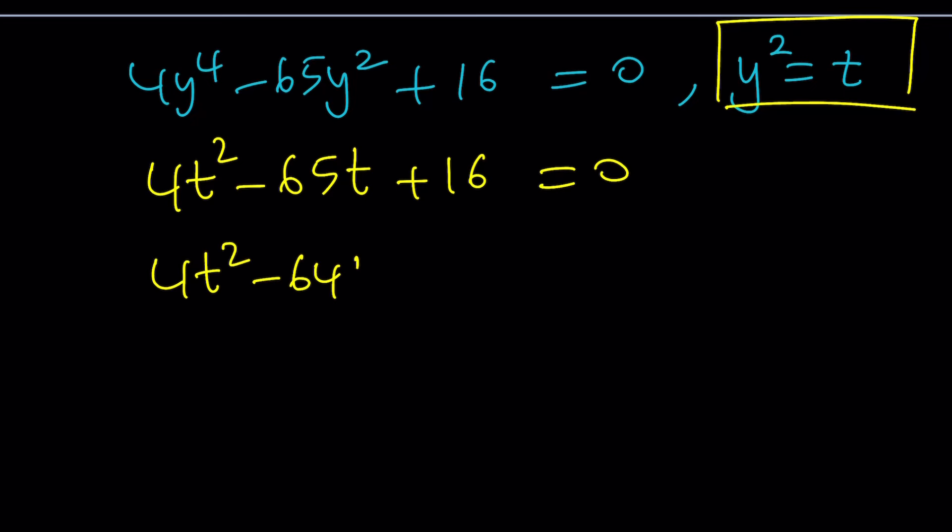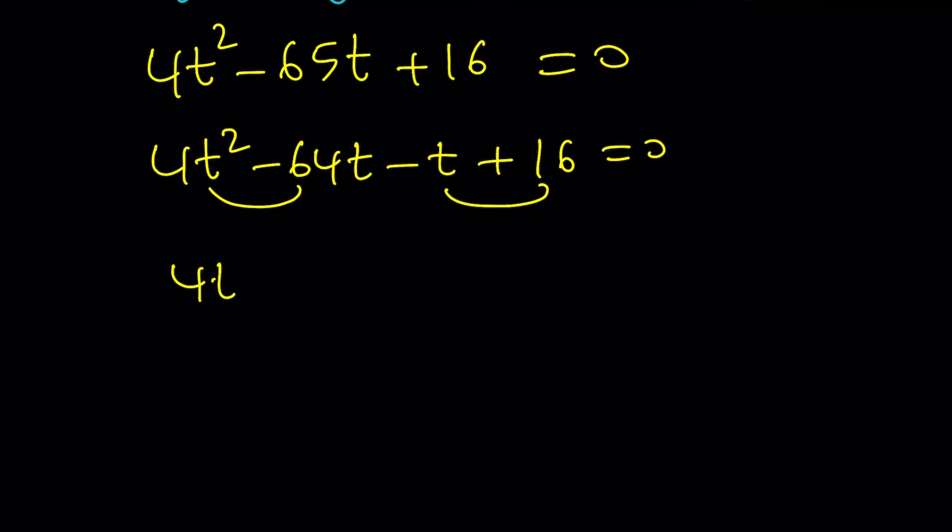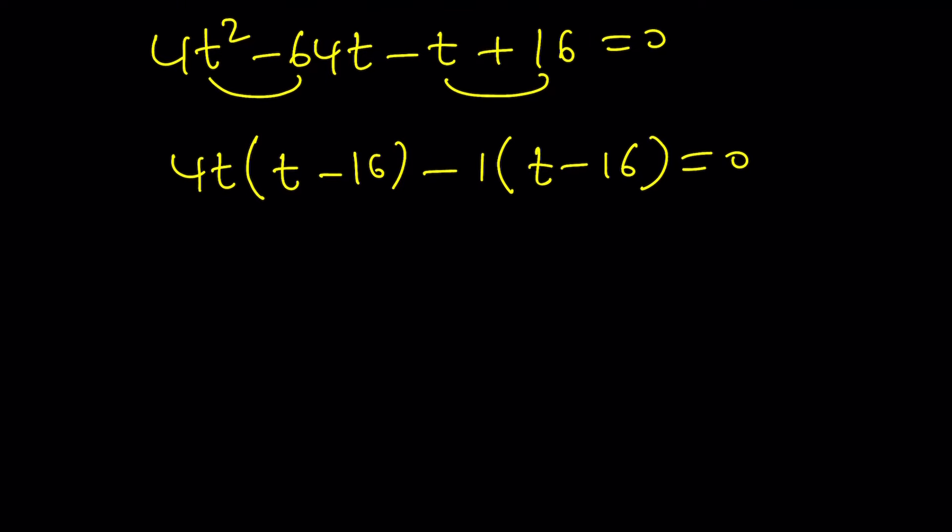We're going to go ahead and split it up into minus 64 minus 1t and then plus 16. And now this is going to be factorable by grouping because if I take out a 4t, that gives me t minus 16. And if I take out a negative 1, that gives me t minus 16. So we get a common factor. And you don't have to use this because this doesn't always work nicely. You can use the quadratic formula. And now we can write this as t minus 16 times 4t minus 1 equals 0.